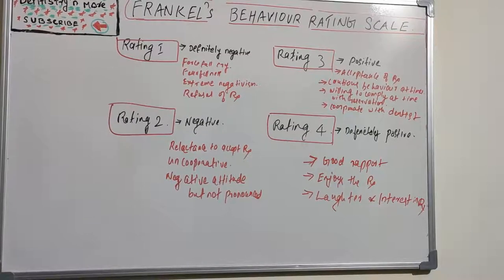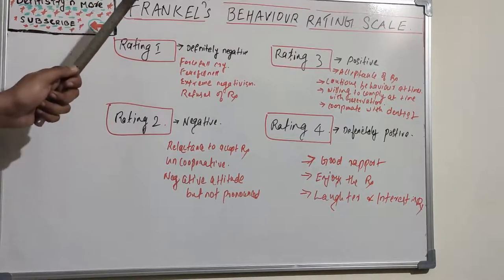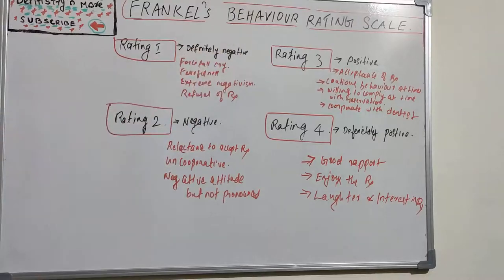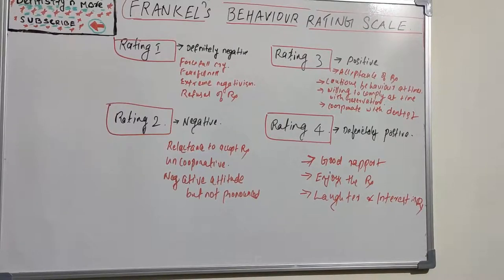Hello everyone, welcome back to a new session on dentistry and more. Today we have a very small topic: Frankl's Behavior Rating Scale. We know kids behave very differently from one kid to another. Various psychologists have put forward classifications to rate a child's behavior, and one among them is Frankl, who put forward four ratings for children's behavior — rating one, two, three, and four.